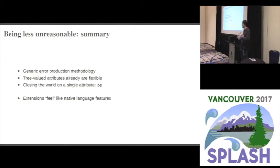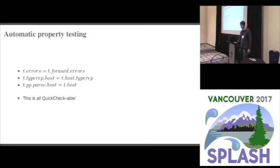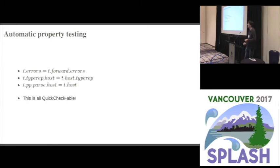Those values can be used to produce custom error messages — we're still able to produce those thanks to the error productions. This is all we need to make extensions feel like native language features. It is enough to make your language extension do arbitrary analysis, report errors, and otherwise not appear to be an extension — it feels like a native host language feature. As a bonus, these requirements are simple equalities between the values of attributes on trees, and all these kinds of things are QuickCheck-able. We can enforce this discipline of being non-interfering by just QuickChecking these properties about your extensions.